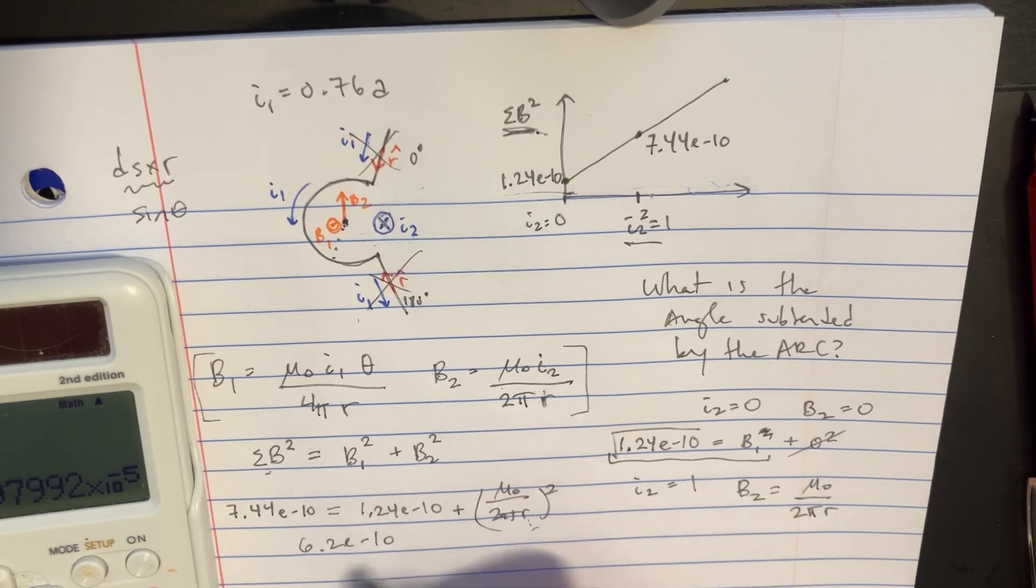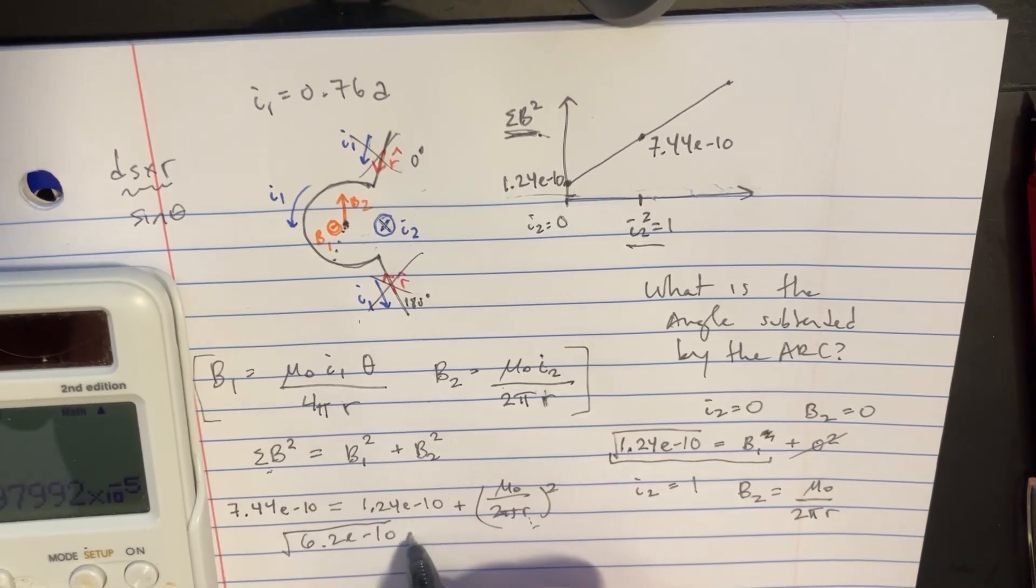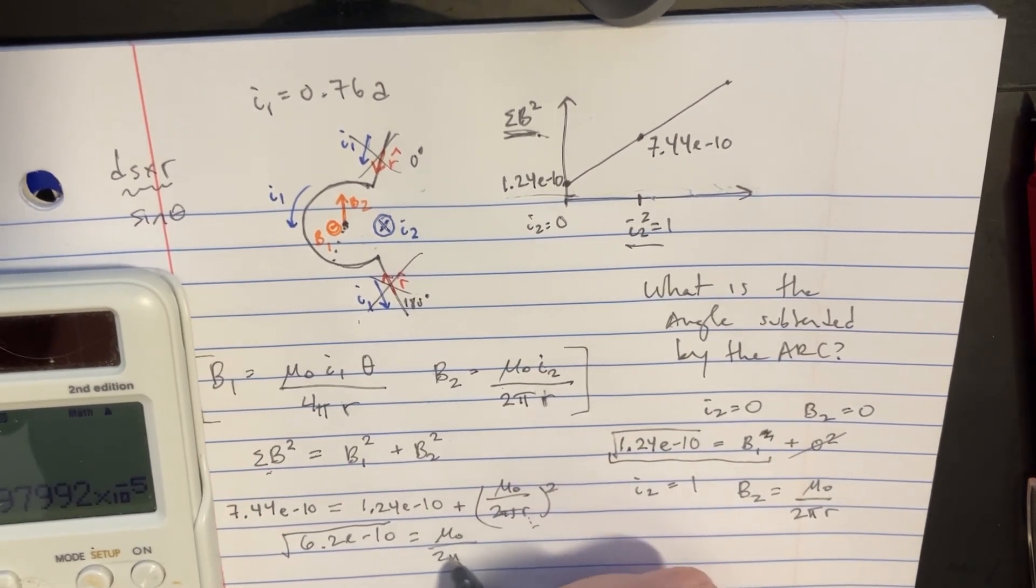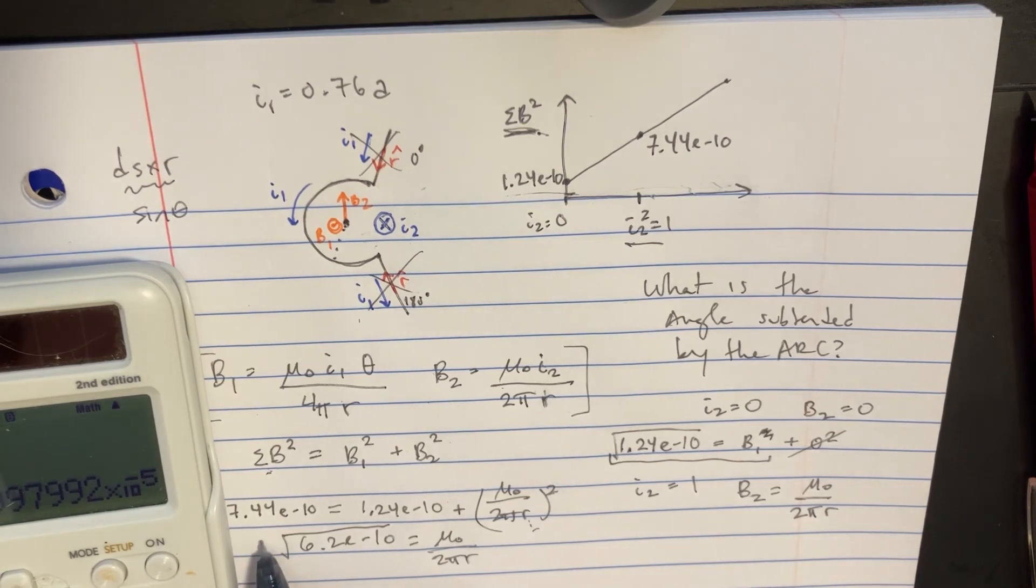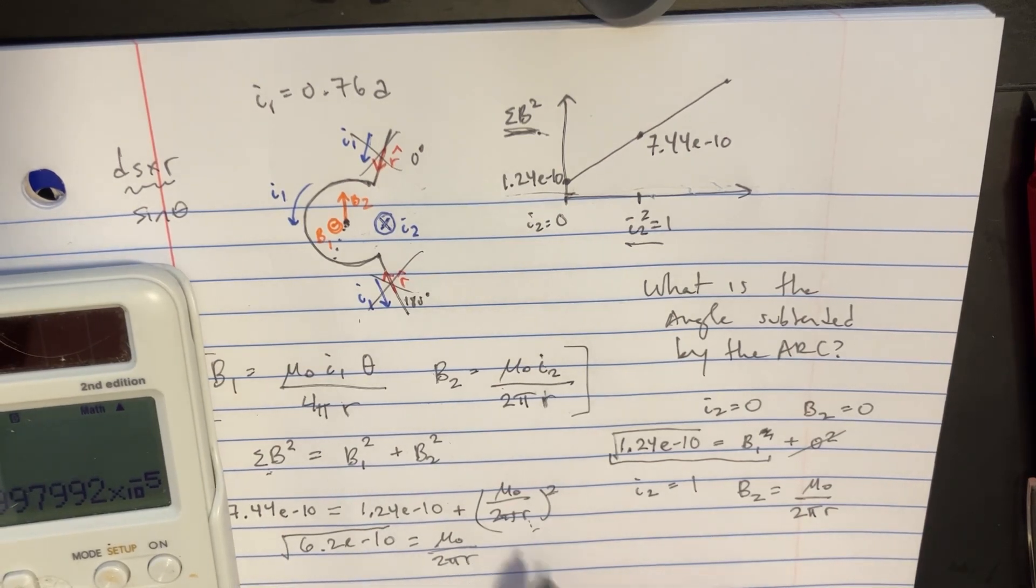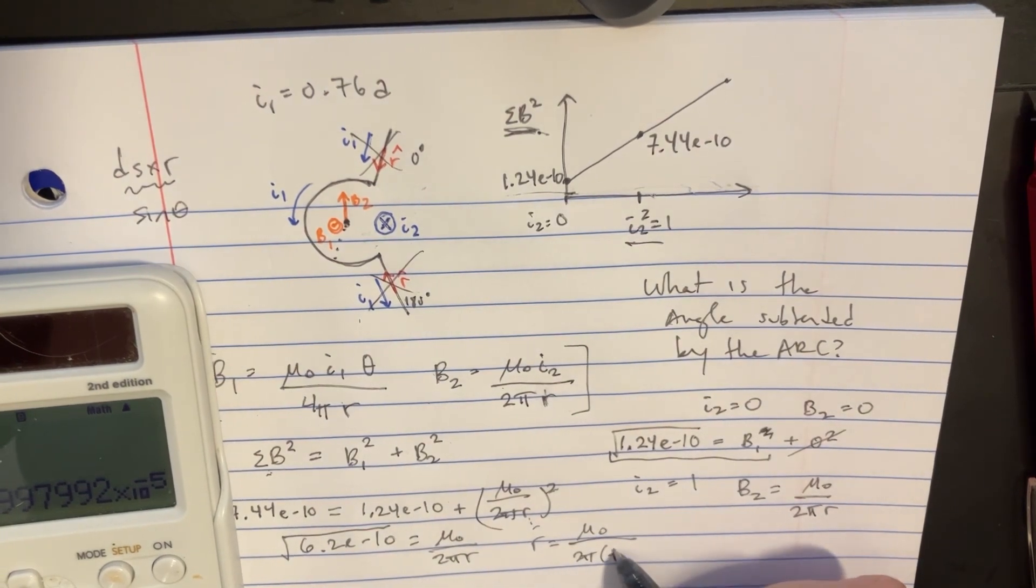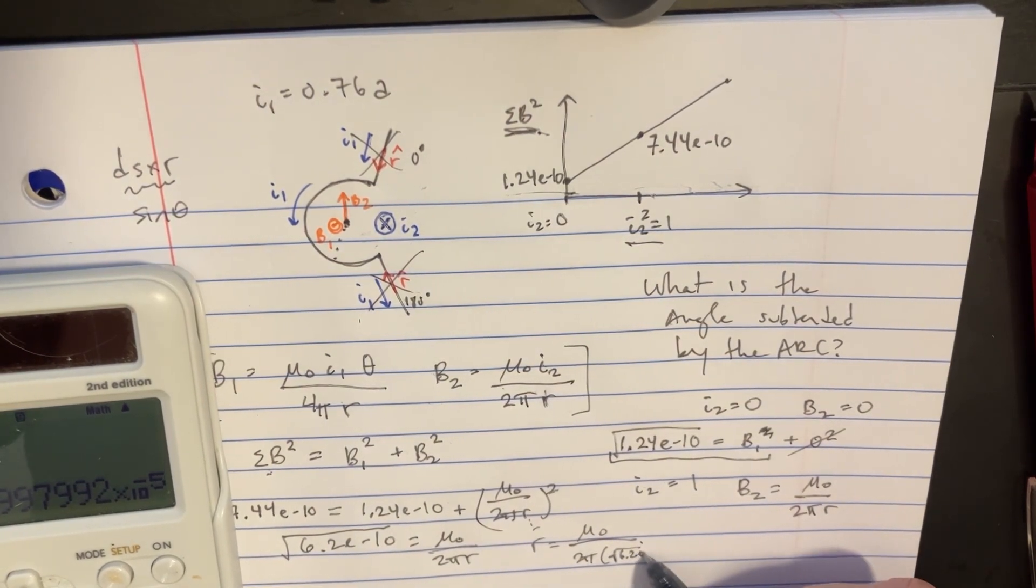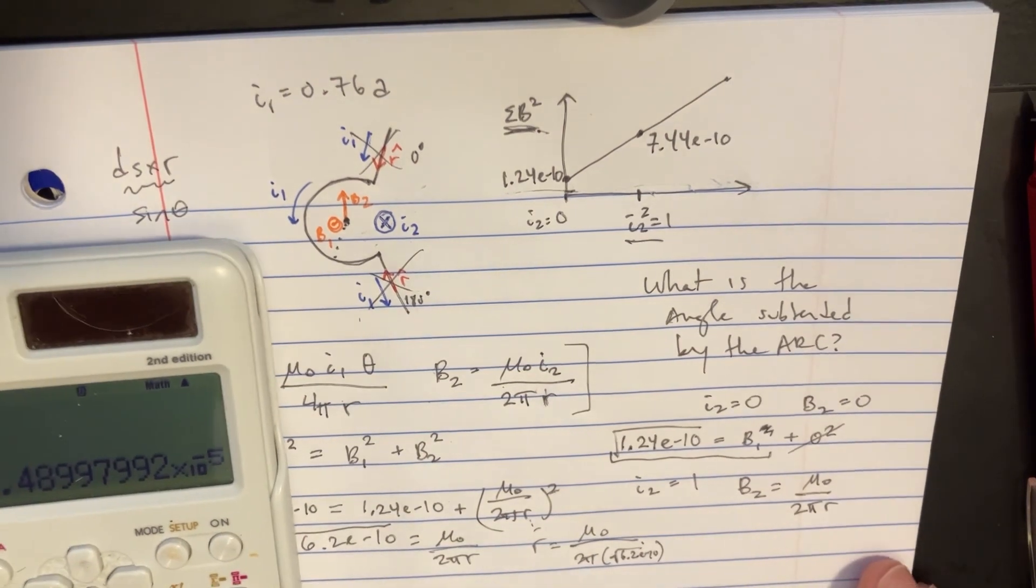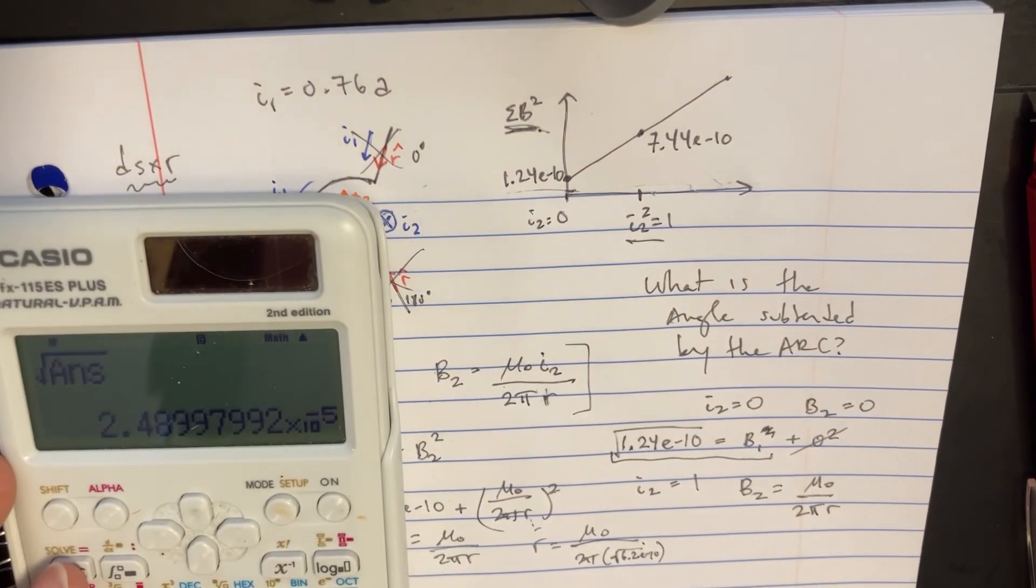And then, so the square root of that equals mu naught over 2 pi r. Put the r over here and then divide that over there. So you kind of get that r equals mu naught over 2 pi times the square root of 6.2, e to negative 10.